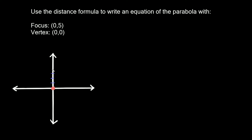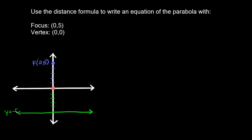The problem also tells us that we have this thing called a focus at (0,5), so let's plot that point — 1, 2, 3, 4, 5 — so at (0,5) we have the focus. Now the only thing we're missing is something called the directrix. That's simply a straight line that is the same distance away from the vertex as the focus is. If the focus is five spots away from the vertex, then the directrix is also five spaces away, so this line is at y = -5.